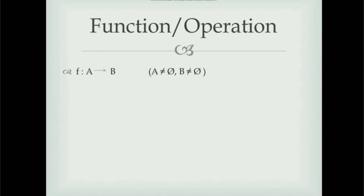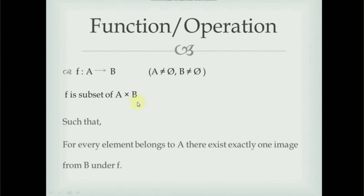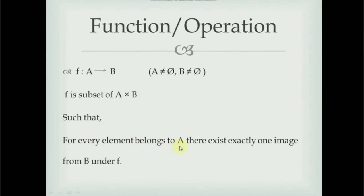The concept of Cartesian product is useful for understanding what is meant by a function or operation. Suppose f is a function from set A to set B, where A and B are non-empty sets. Then f is a subset of the Cartesian product A cross B such that for every element belonging to A, there exists exactly one image from B under f.